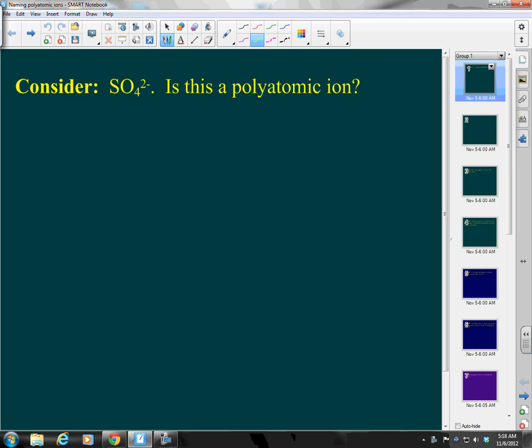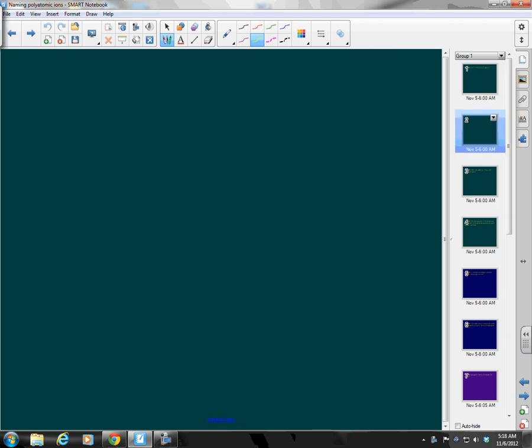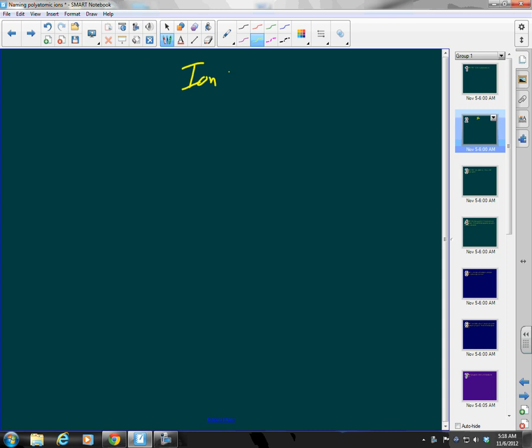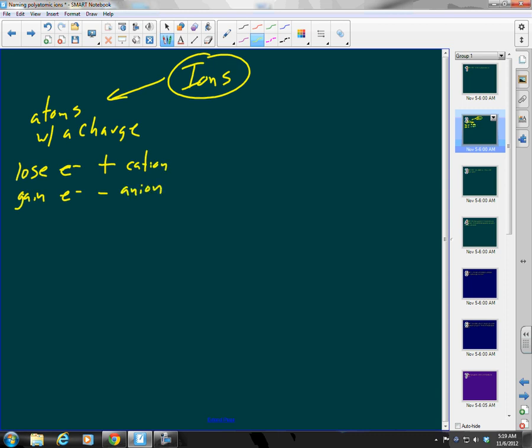Okay, so let us consider SO4 2-. Is this a polyatomic ion? Well, we need to take some notes. So let's start up here with ions. What are ions? Ions are atoms with a charge. We remember that. How do you get a charge? You either gain or lose electrons. If you lose an electron, you have a positive charge, and if you gain an electron, you have a negative charge. And what is it that we call a positively charged ion? We call that a cation, and we call a negatively charged ion an anion.